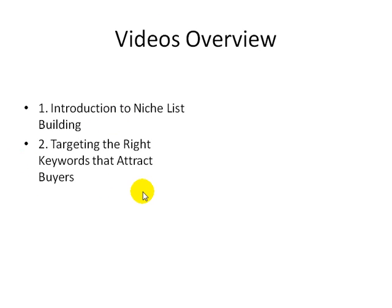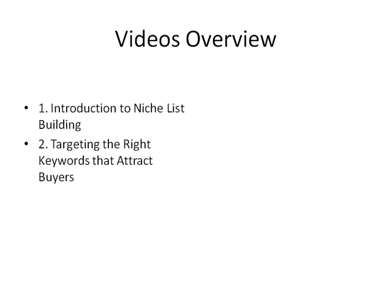Video number two is targeting the right keywords that attract buyers. Using the right keywords in your WordPress blog is important because when Google and other search engines come to your website, they need to know how to categorize your site and connect buyers and prospects to your WordPress blog. From that point, you can start building your list.